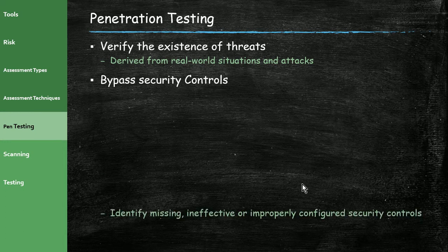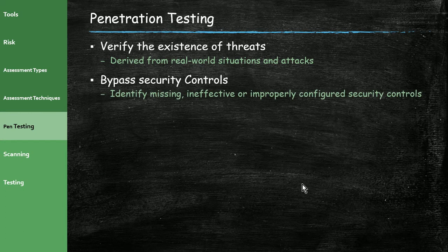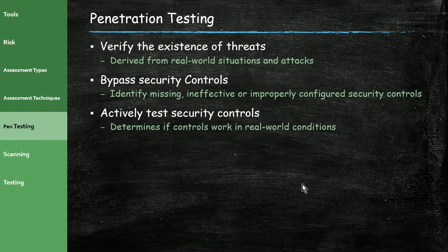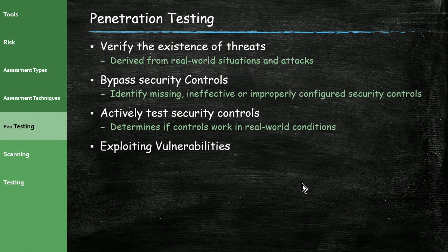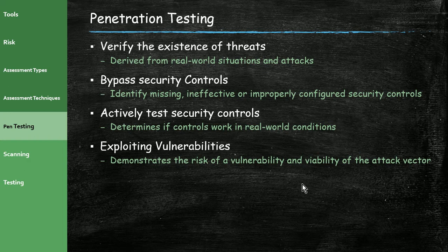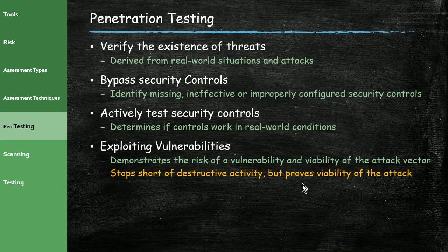Pen testing can verify the existence of threats derived from real-world situations, bypass security controls, and identify missing, ineffective, or improperly configured security controls. It actively tests controls in real-world conditions. Regarding exploiting vulnerabilities: pen testing demonstrates the risk of a vulnerability and the viability of an attack vector, but stops short of destructive activity. A pen tester might place a file somewhere to prove they got in, but won't actually steal credit card numbers — they just prove it's possible.